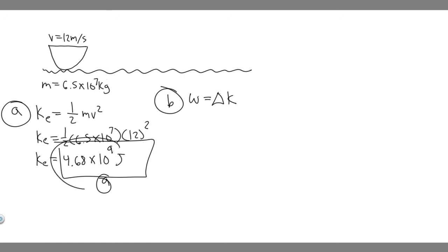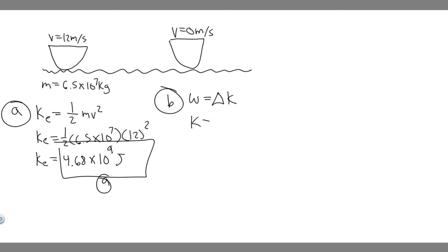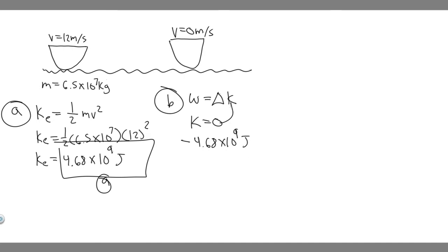Think about how this works. At this time, the kinetic energy is 4.68 times 10 to the 9 joules. At the point where it stops, the velocity is 0 meters per second, so the kinetic energy is also 0 — because it's one half times mass times 0 squared, which equals 0. The change in kinetic energy is therefore negative 4.68 times 10 to the 9 joules. Since work equals the change in kinetic energy, the work required to stop it is negative 4.68 times 10 to the 9 joules. That's your answer to part B.